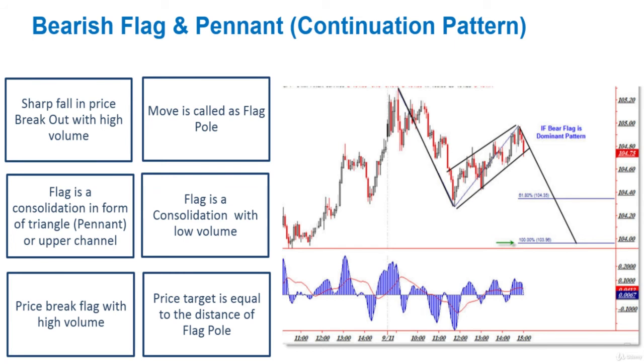Once the price breaks the flag with high volume, it is considered a valid breakout. After the breakout, the price target is equal to the distance of the flag pole. For example, if the flag pole is sixty dollars, then after the price breaks out, the price moves downside by an equal amount. Volume is high in the initial pole and after the price breaks out the flag pattern. Generally, bearish flag and pennant patterns are formed in the middle of the trend and are considered continuation patterns.